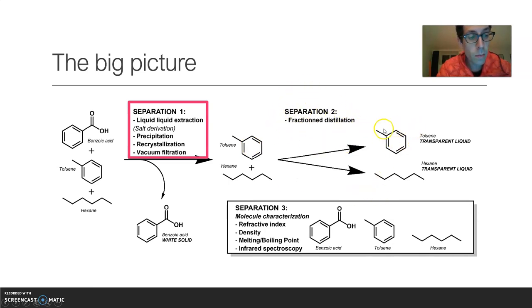And then on week 2, on separation 2, we're going to perform fractional distillation to separate toluene and hexane. And on week 3 we're going to become expert at characterizing and measuring the physical properties of these substances in order to know if we have them and if they are pure. That's it.